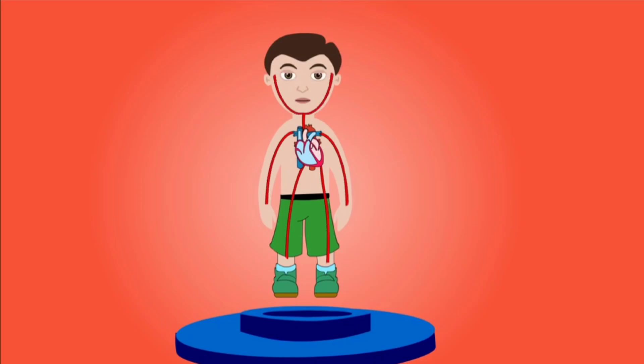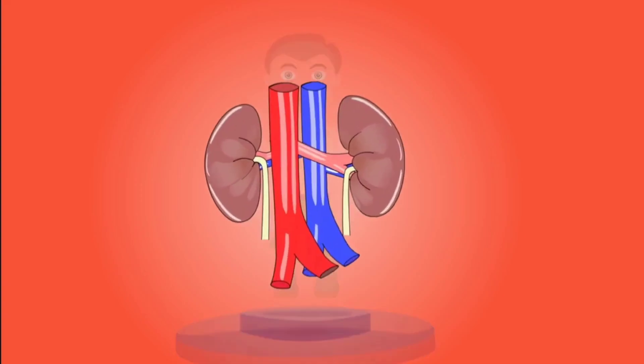The main function of your heart is to keep oxygenated blood circulating throughout your body. Kidneys are bean-shaped and are around 10 to 12 centimeters long.